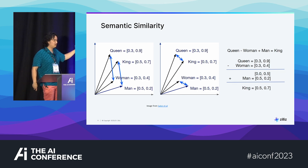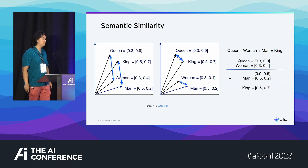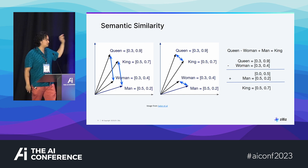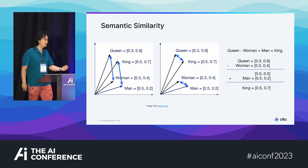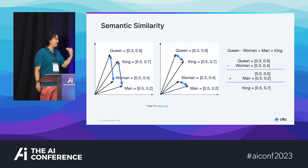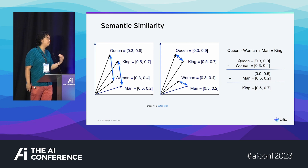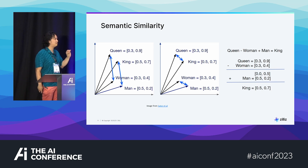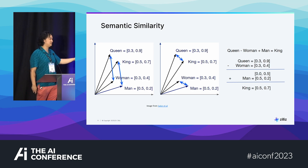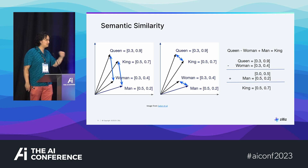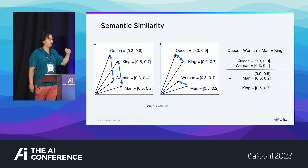Okay, that makes sense. But how is a machine learning model going to make sense of that? It needs numbers. What I'm showing you here is just a toy example — a two-dimensional vector. We're taking the vector of queen, which is (0.3, 0.9), subtracting the vector of woman, which is (0.3, 0.4), and then adding the vector of man, which is (0.5, 0.2). And we get the vector of king, which is (0.5, 0.7). What I want you to understand from this is that vectors allow you to do math on things that are not numbers.